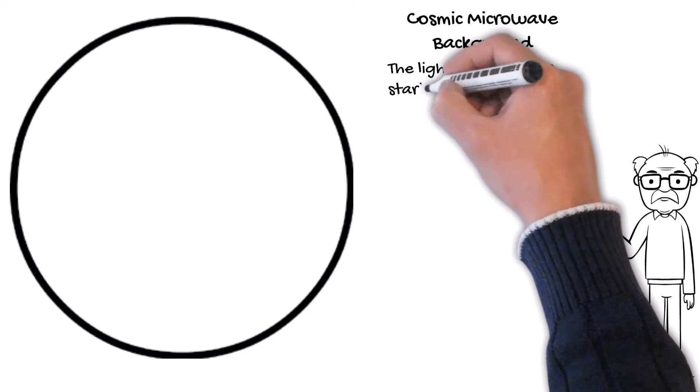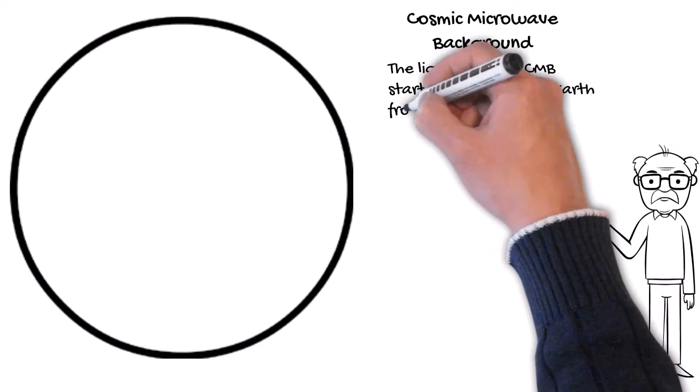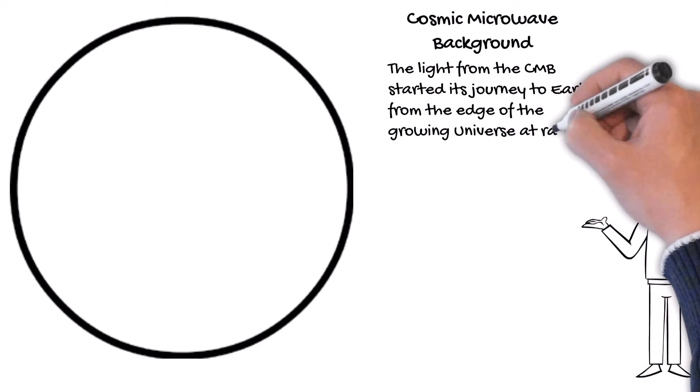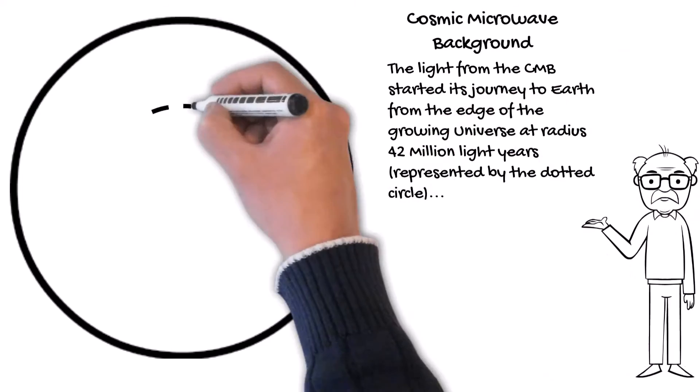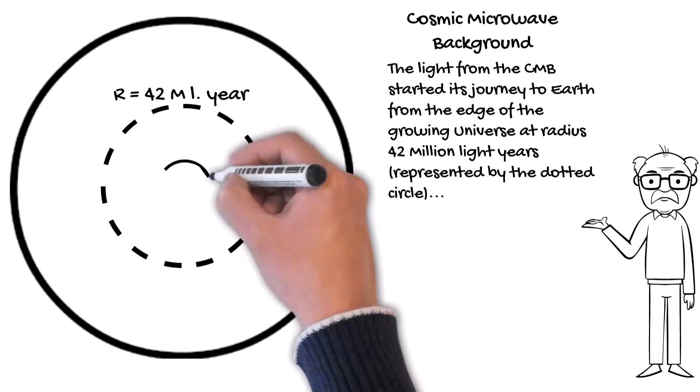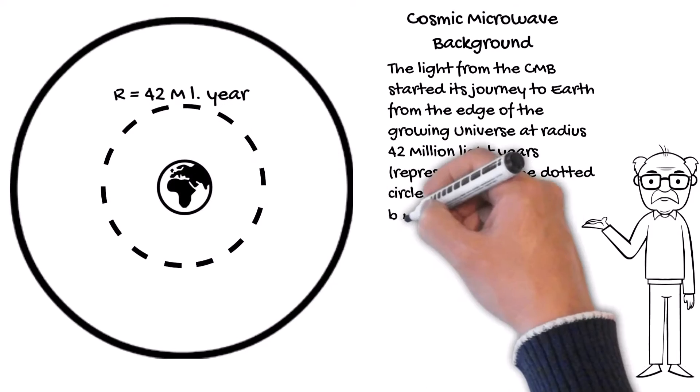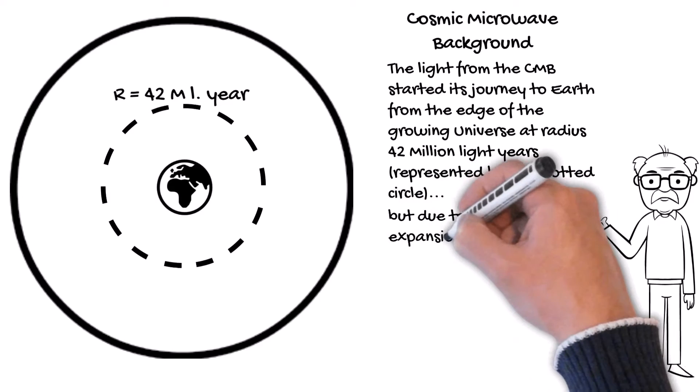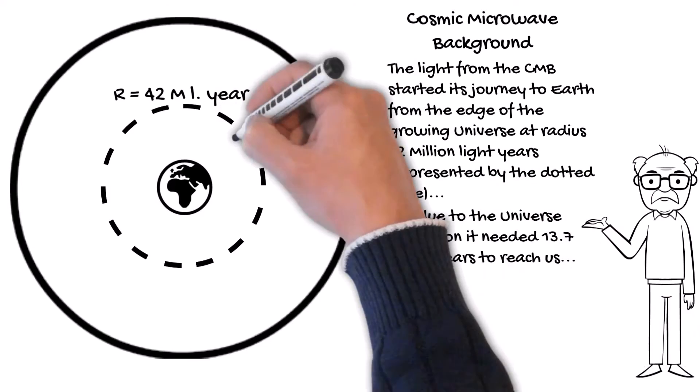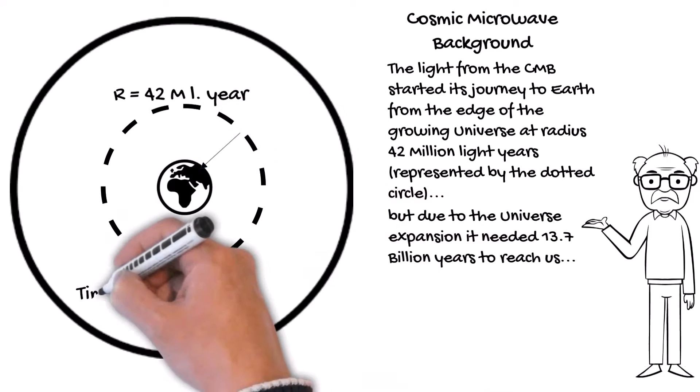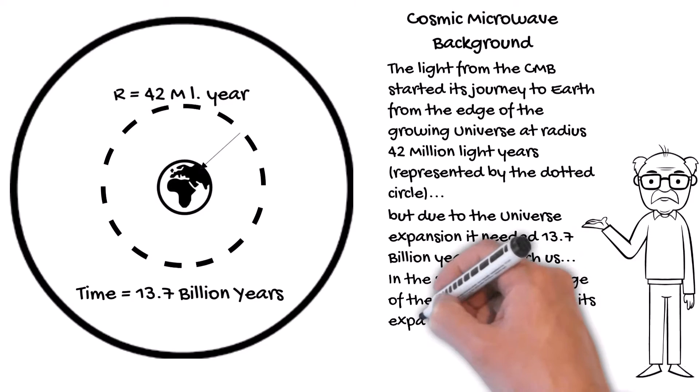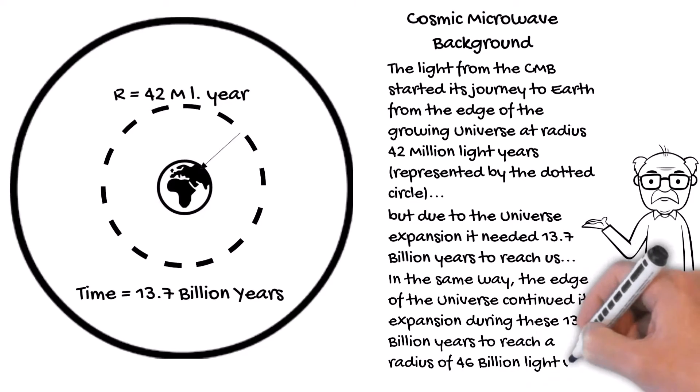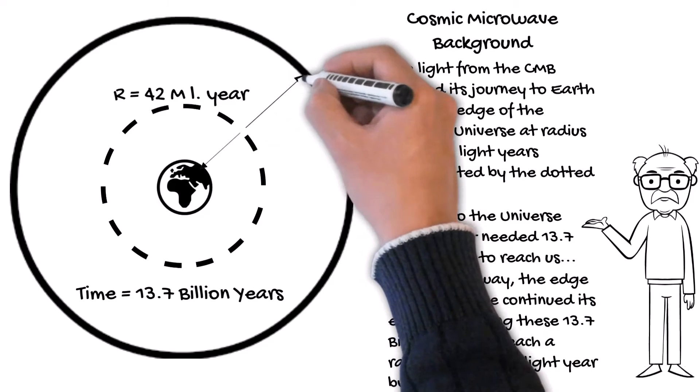The light from the CMB started its journey to earth from the edge of the growing universe at a radius of 42 million light years, represented by the dotted circle. But due to the universe expansion, it needed 13.7 billion years to reach us. In the same way, the edge of the universe continued its expansion during these 13.7 billion years to reach a radius of 46 billion light years by now.